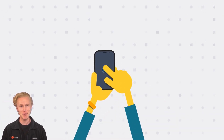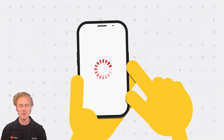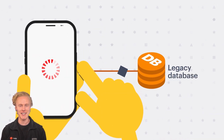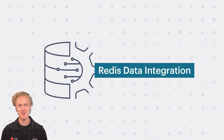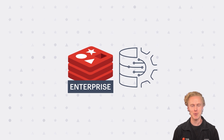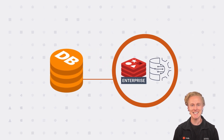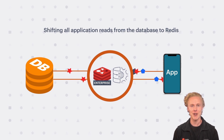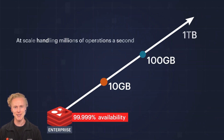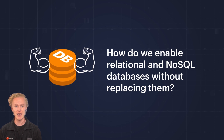Users expect applications to respond in real-time, but legacy databases can't provide that experience. Enter Redis Data Integration, or RDI. This tool, running within Redis Enterprise, syncs data from your existing database to Redis in near real-time, shifting all application operations from the database to Redis. Redis Enterprise delivers real-time responsiveness at scale, handling millions of operations a second — but how do we enable that responsiveness in relational and NoSQL databases without replacing them?